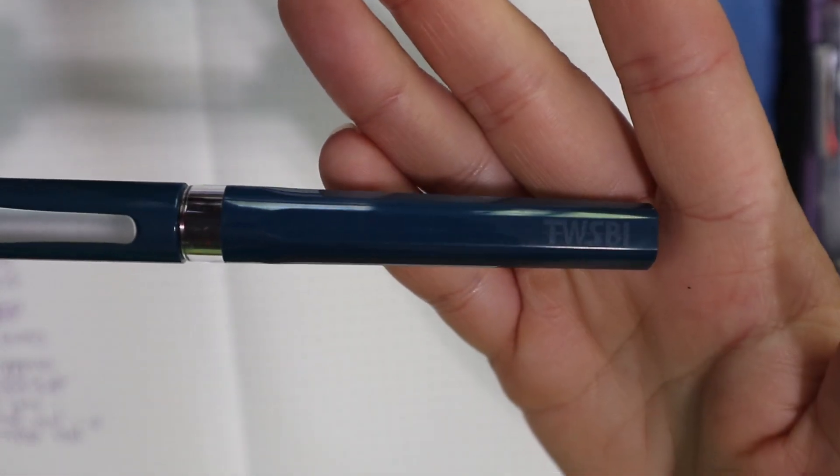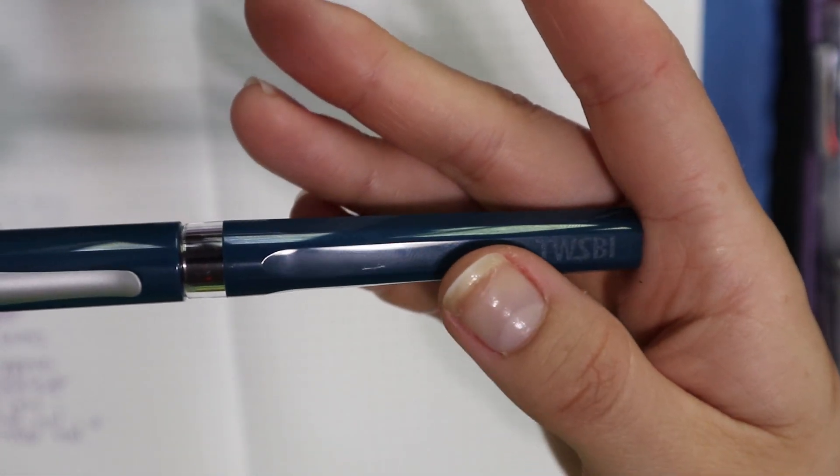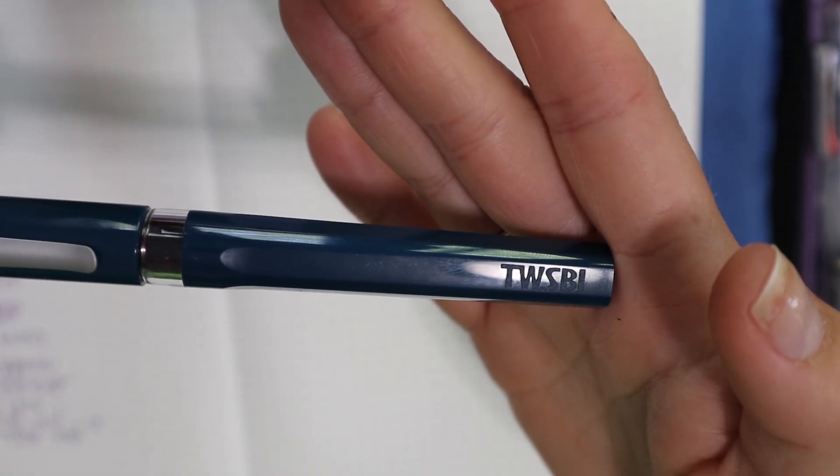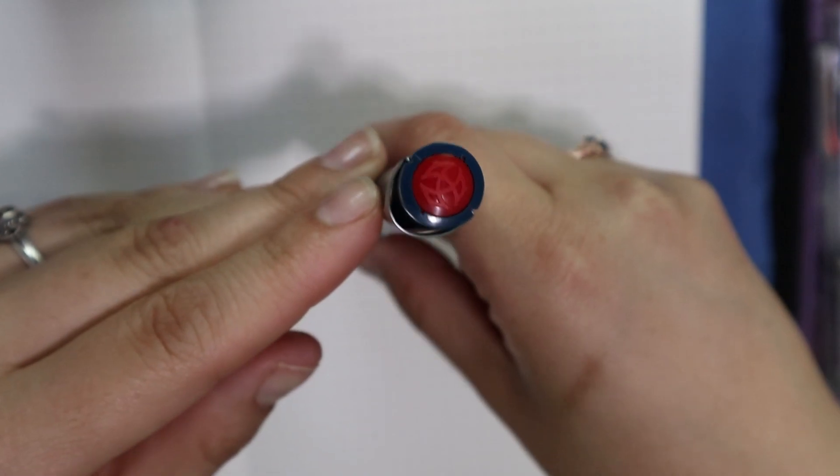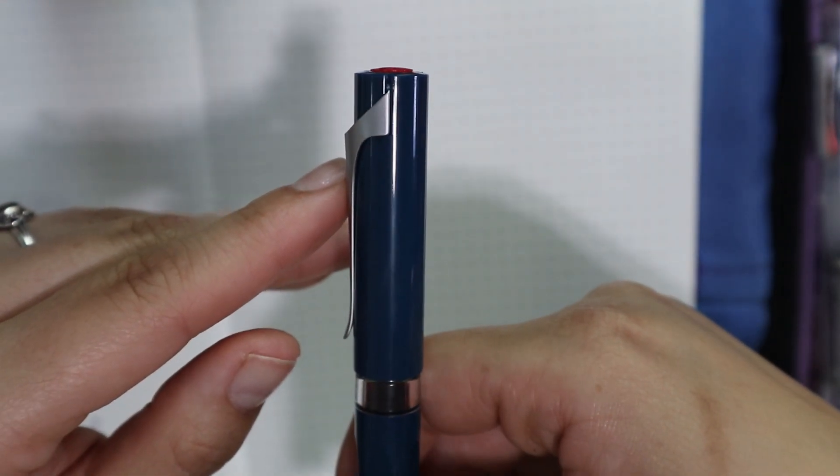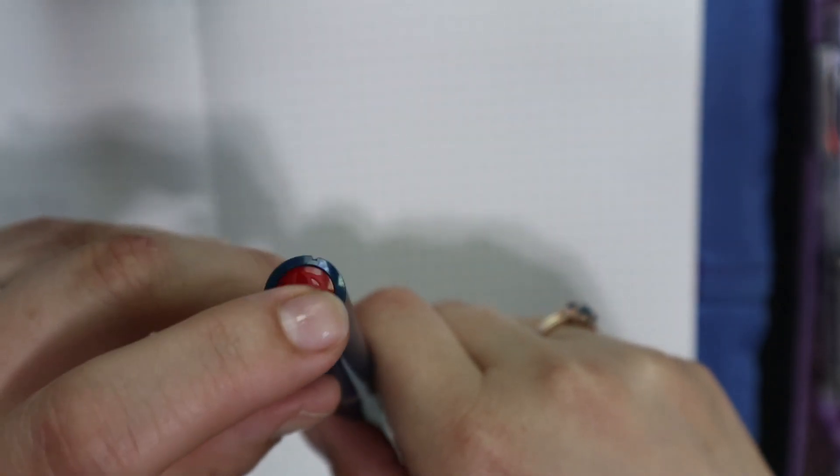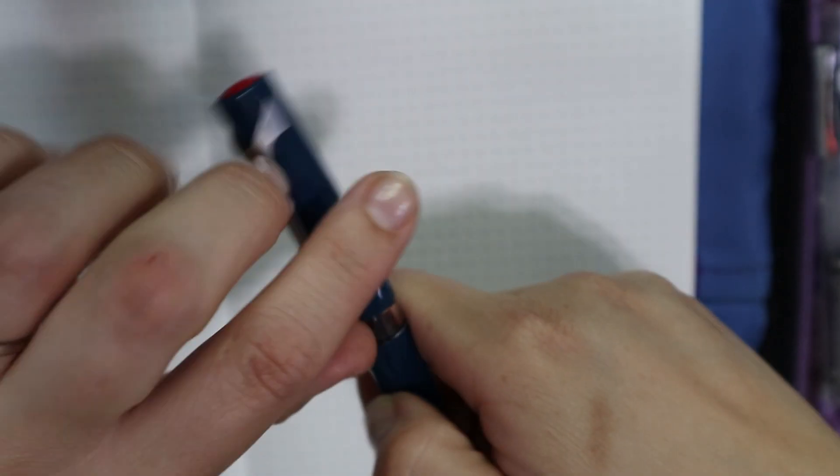It's the blue one, and there's like an imprint of the TWSBI name, and on top we have the red plastic logo. It's kind of domed, or on top of the cap, and not really like in the cap.